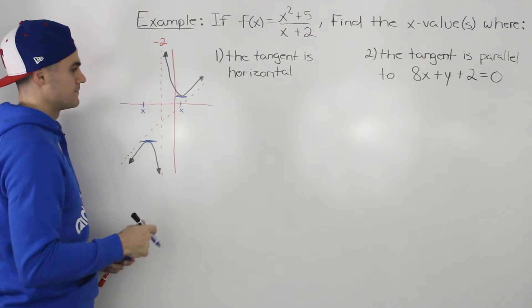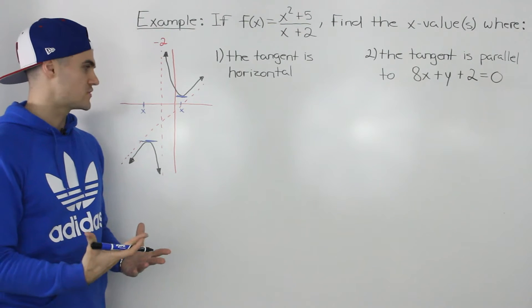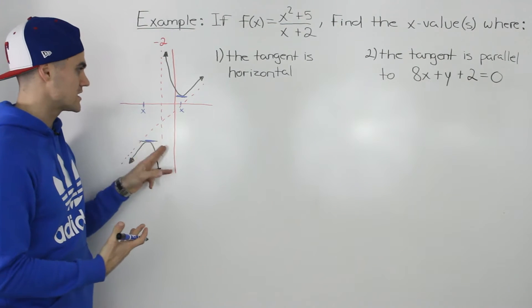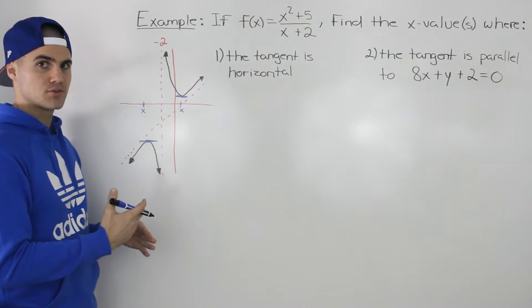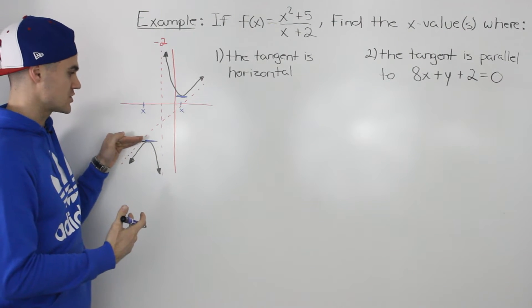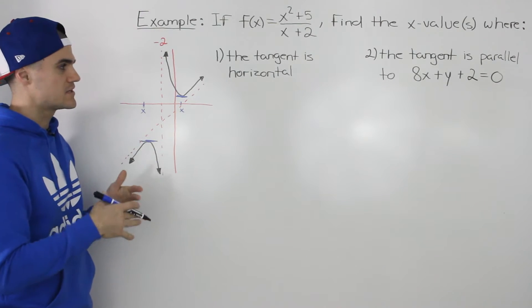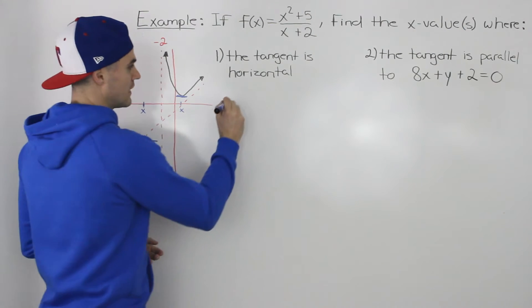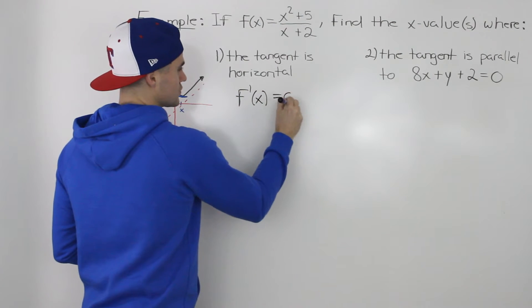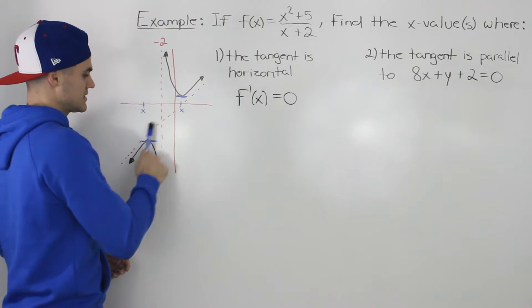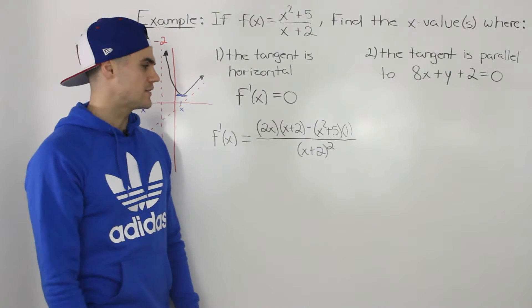How do we do that? We know that the derivative of a function always gives us the slope of a tangent at a specific x value. So if we're looking for the x values where there's going to be a horizontal tangent, the slope of the tangent is going to be 0. We have to find the x values where the derivative is equal to 0, because horizontal lines have a slope of 0.